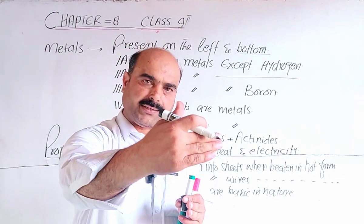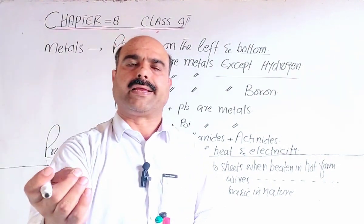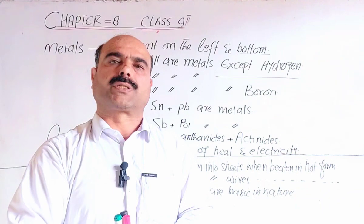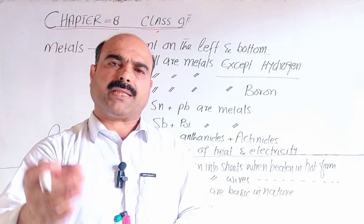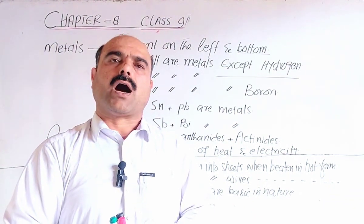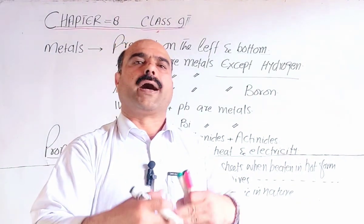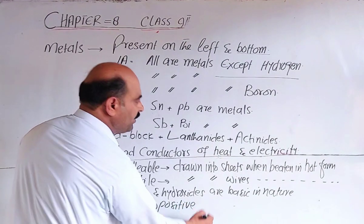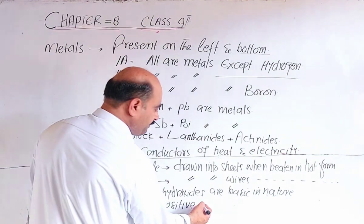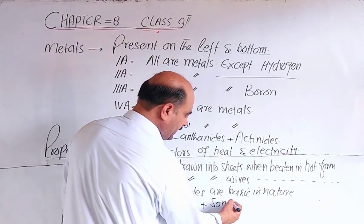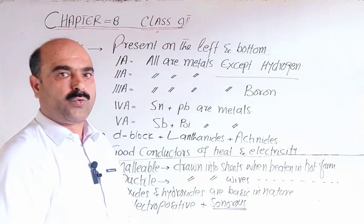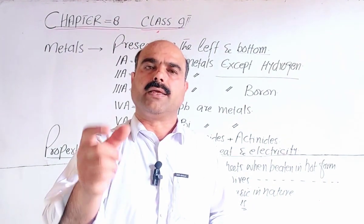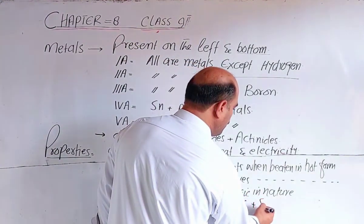Metals have large atomic sizes because they are on the left side of the periodic table — from left to right size decreases. The outer electrons are far from the nucleus, so attractive force is weak, binding force is weak, and electron removal is easy. Thus metals easily lose electrons and gain positive charge — they are electro-positive. Metals are also sonorous — they produce a ringing sound when hammered or beaten.